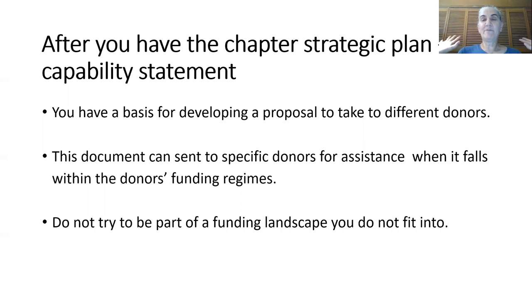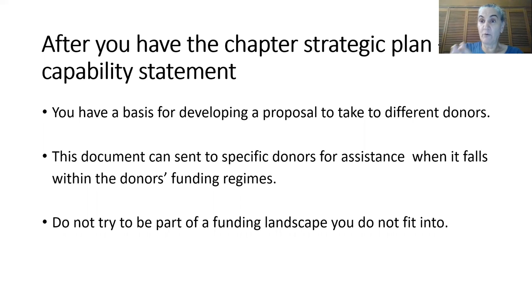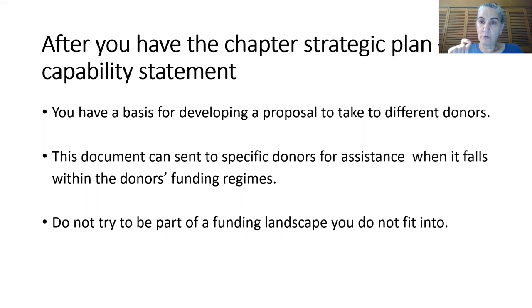After you've done this — after you have the chapter strategic plan and the capability statement — you then have the basis for developing a proposal to take to different donors or funding agencies. The strategic plan plus capability statement could in itself be sent to specific donors or organizations for financing when the plan falls within what those donors are looking for. But don't try to be part of a funding landscape you don't fit into — look for donors who are interested in what you want to do.